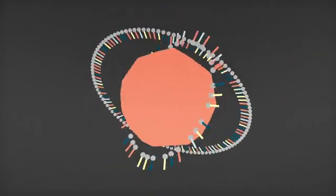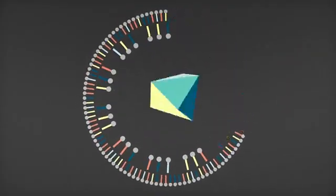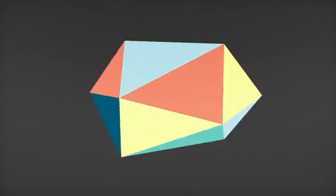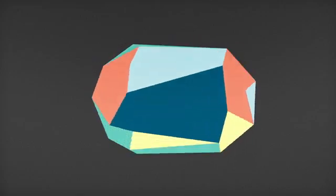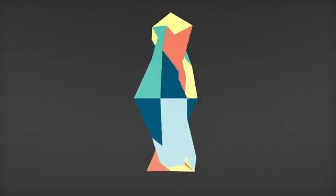Chromosomes contain many genes. A gene is a section of DNA that holds the instructions for a protein. Proteins are essential for life and perform a huge variety of jobs, from controlling the function of a single cell to determining the shape of a whole organism.